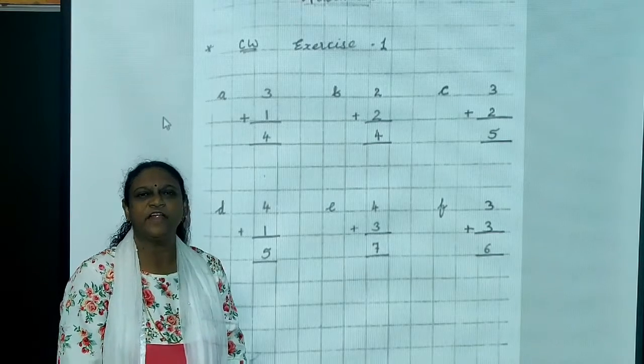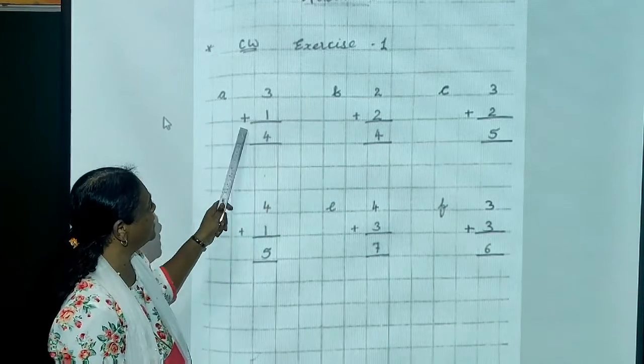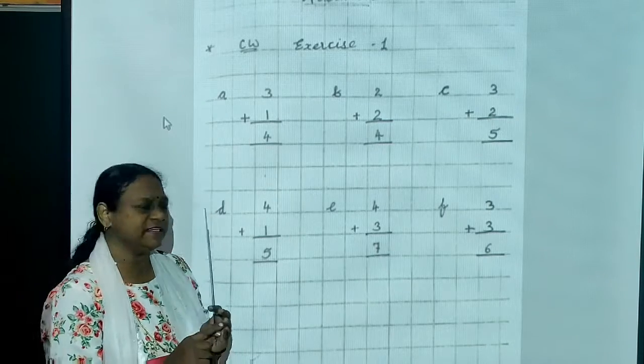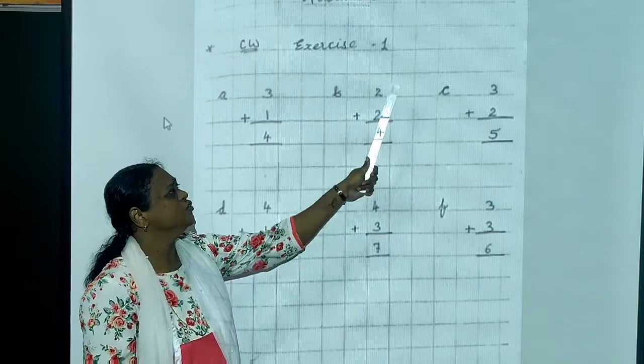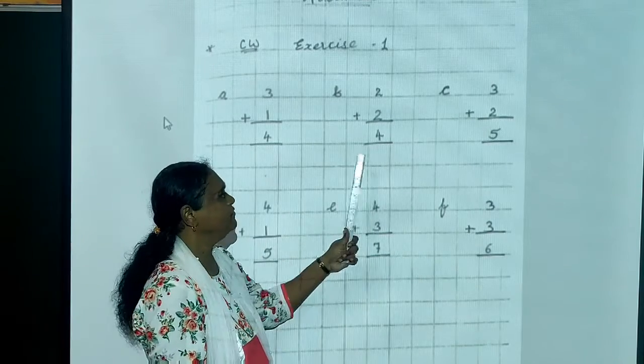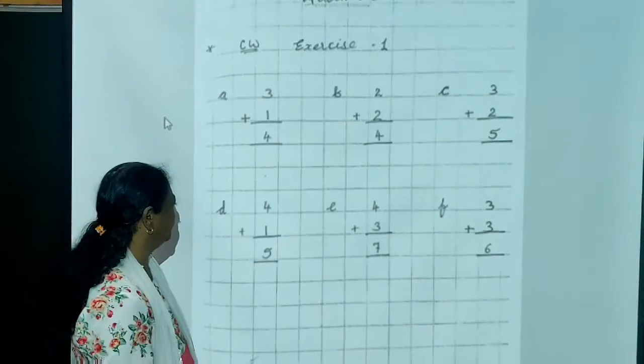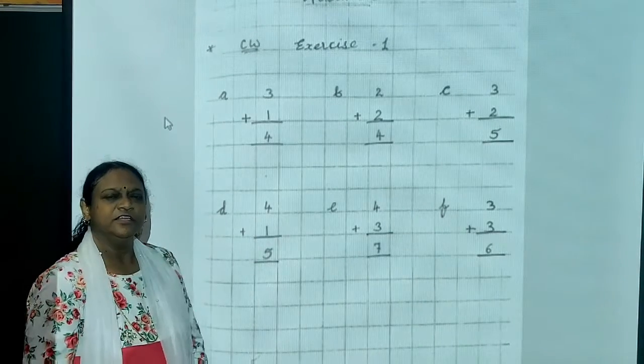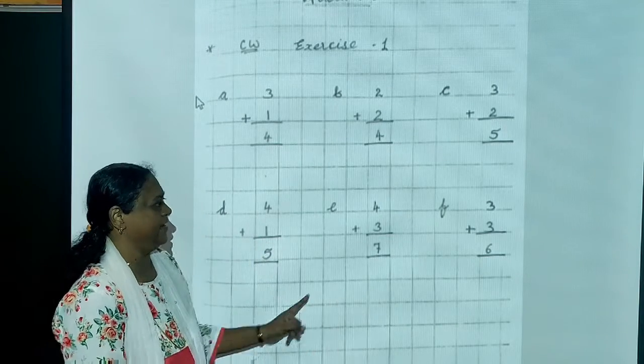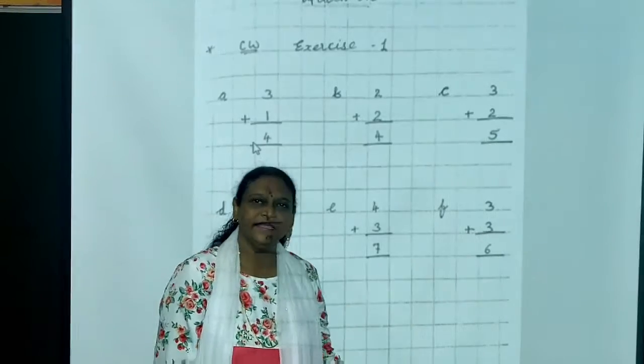Now, these are the exercises which you have to write in your workbook. So, exercise 1. Addition. 3 plus 1. You have to count with your fingers. 3 plus 1. Answer is 4. 2 plus 2 equals 4. 3 plus 2 equals 5. 4 plus 1. Children, you have to count with your fingers. 4 plus 1 equals 5. 4 plus 3 equals 7. 3 plus 3 equals 6.